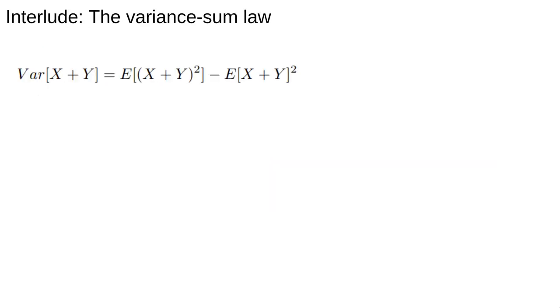To compute the variance of the sampling distribution, I need to pause here and introduce something called the variance sum law. Just like we know how to deal with the expectation of a sum of variables, there is a simple formula for the variance of the sum. We start off with the definition of variance. If you need a refresher, look back at the previous videos. The rest of the calculation is basically just using linearity of expectation and expanding all the squares.